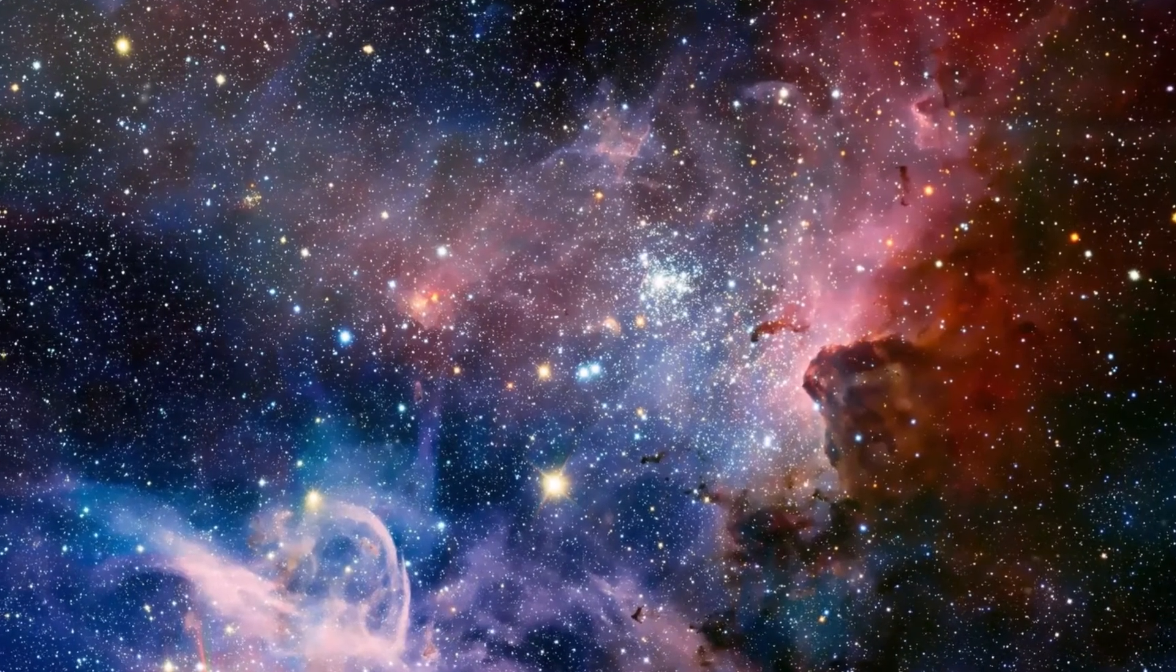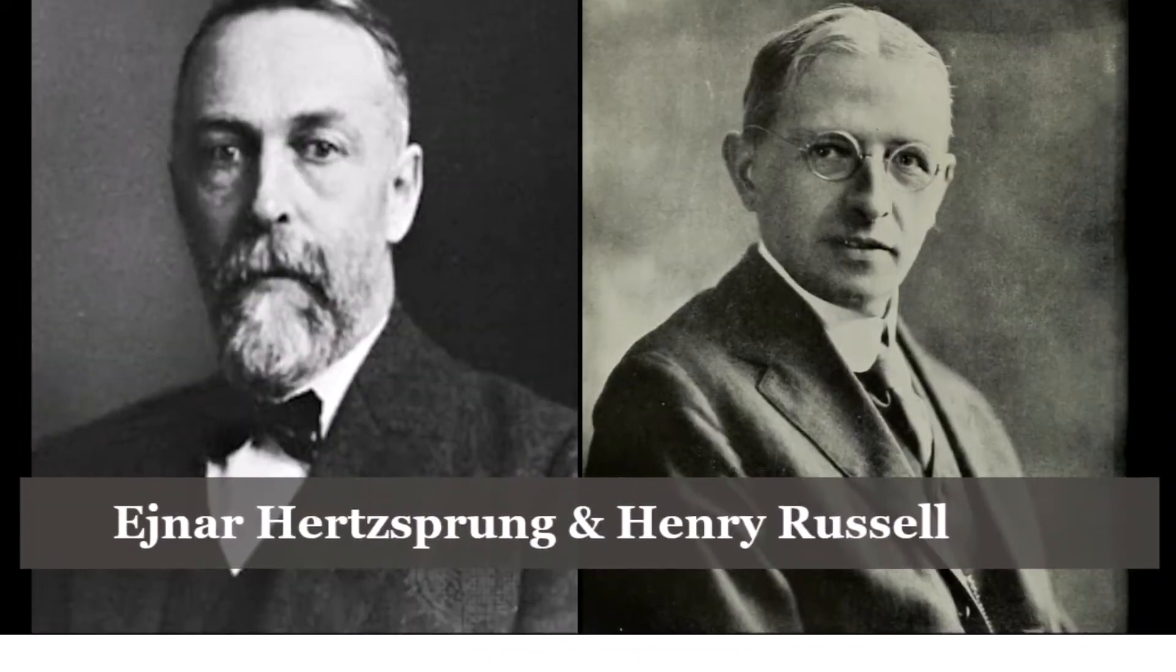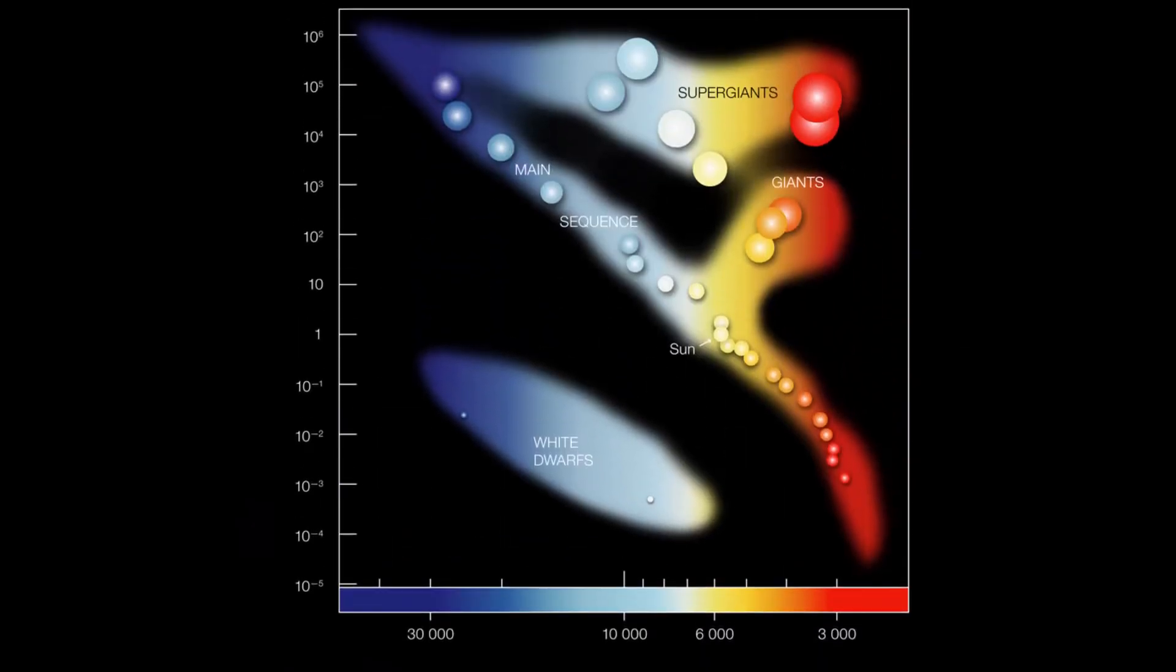Of course, there is much more to classifying stars than temperature or color. Let's take a look at something called the Hertzsprung-Russell diagram, or the HR diagram for short. The HR diagram is a scatterplot of stars that allows us to sort them by brightness, or luminosity, and temperature. As you can see, there is a correlation between temperature and color, as well as size and luminosity.